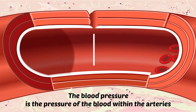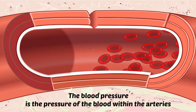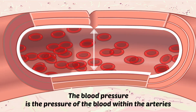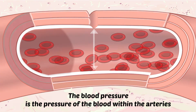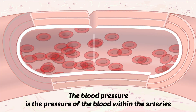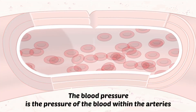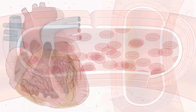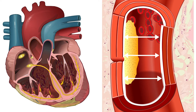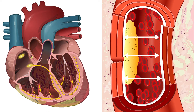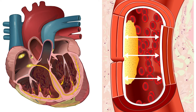What is blood pressure? Blood pressure is the pressure of the blood within the arteries. It is produced primarily by the contraction of the heart muscle.